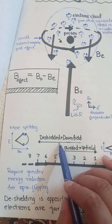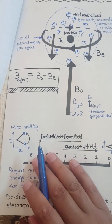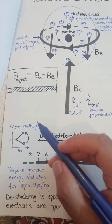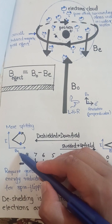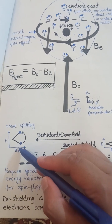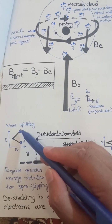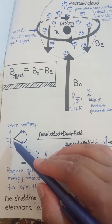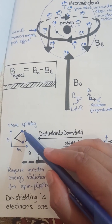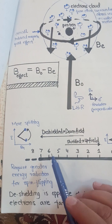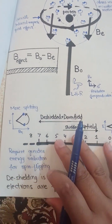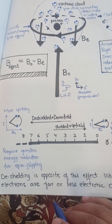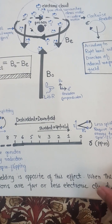In case of deshielding effect, the peaks will be downfield. During deshielding, which is the opposite of shielding, the effect of external magnetic field will be increased. Due to the increased external magnetic field effect, the splitting of the two spin states will be increased, and therefore more energy or high energy is required for spin flipping. Due to this reason, the peaks will be shifted downfield. Deshielding occurs when the electronic clouds are less or far from the proton.